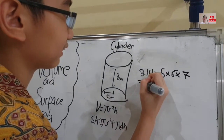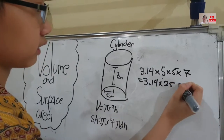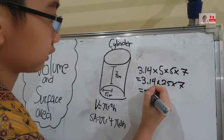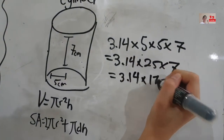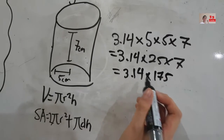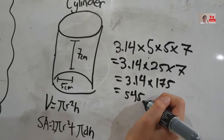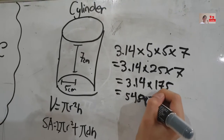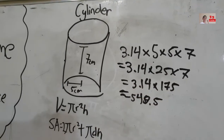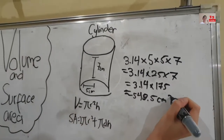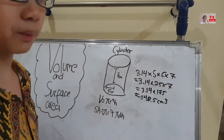We will calculate it. 3.14, and 5 times 5 equals 25, and times 7. What is 3.14 times 175? It will be equal to 549.5. And the answer for the volume is 549.5 centimeters cubed.